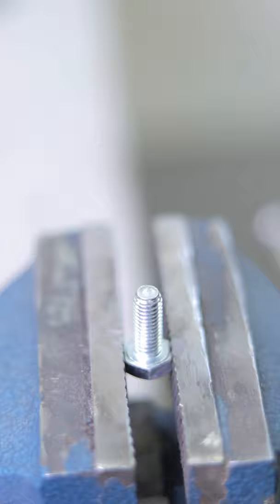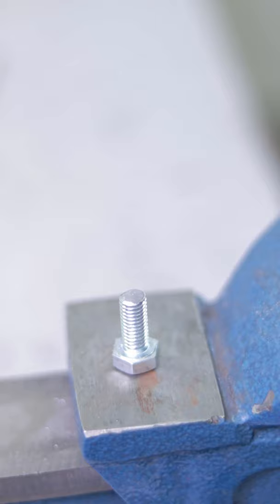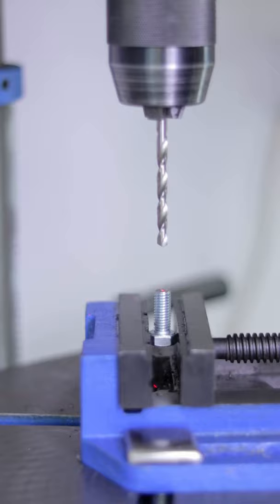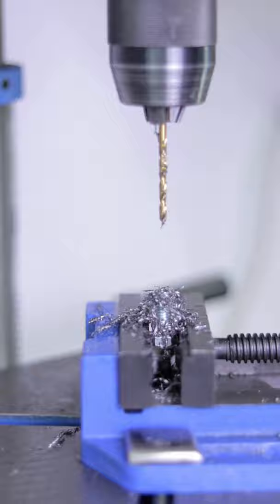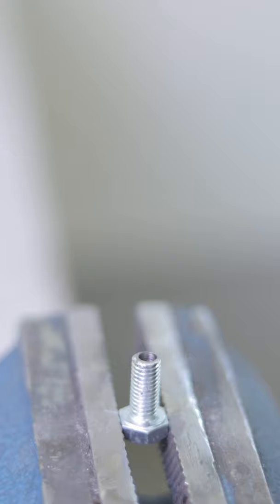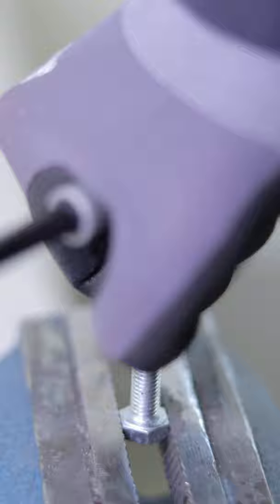The turn signals have a 6 millimeter bolt while the headlights have an 8 millimeter bolt, so I have to make an adapter. I'm using a regular 8 millimeter bolt, drilling a hole in the center, and then threading 6 millimeters so I can screw in the turn signals at the end.